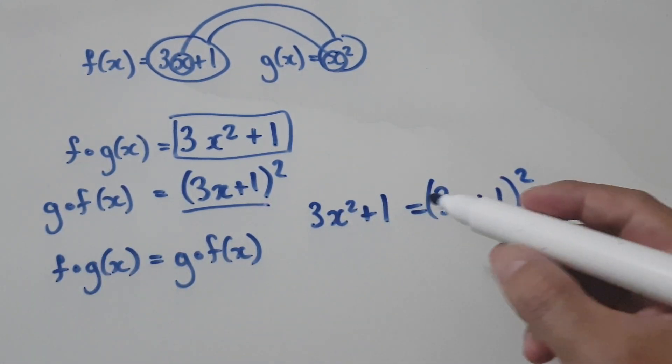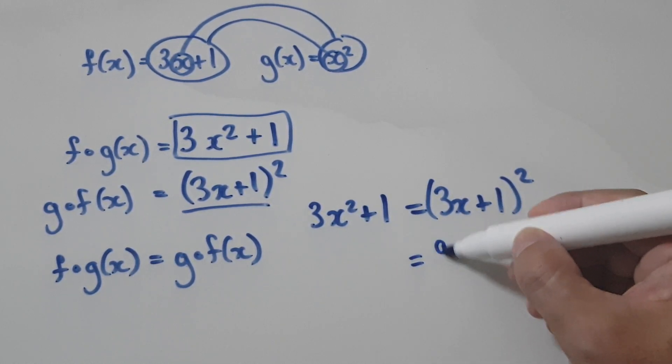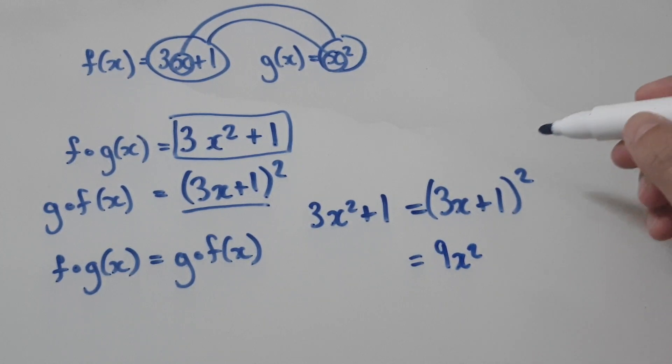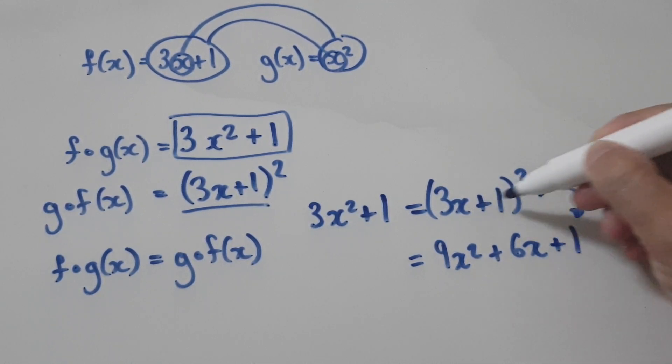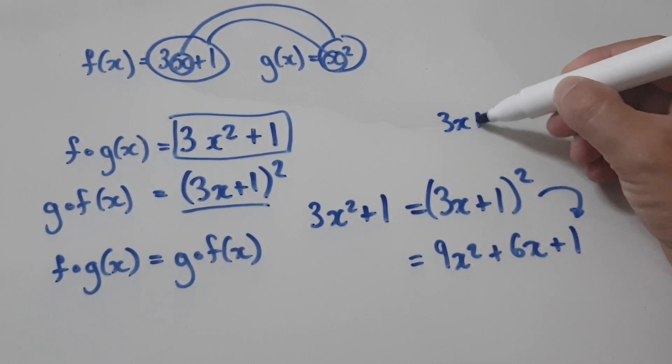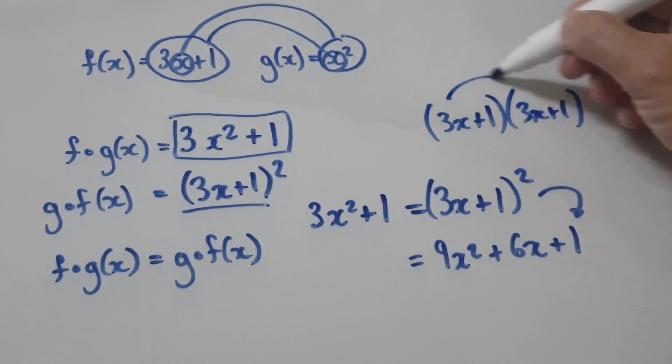So now it's just a matter of solving this. To solve this, let's multiply this out. 9x squared, plus you're going to get 3x and another 3x that would be 6x, and then one times one would be plus one. You see I can do this in my head, but when you come to do it, you have to do it step by step.